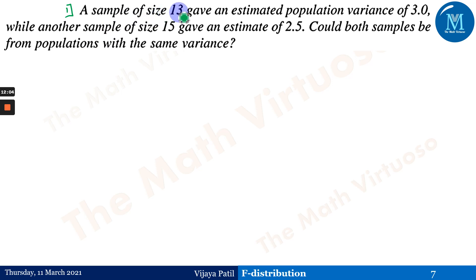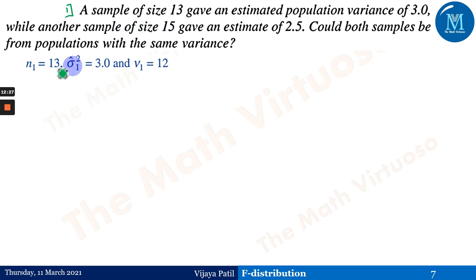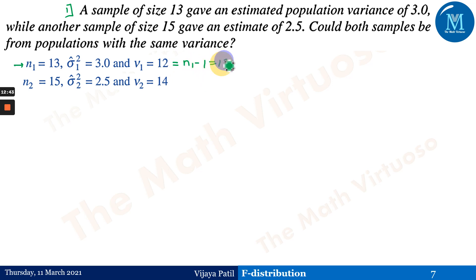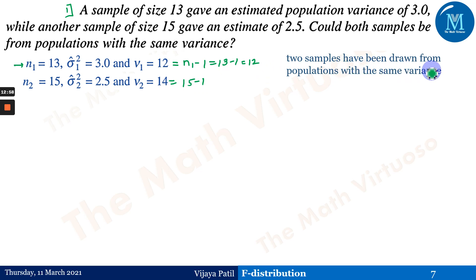Example 1: A sample of size 13 gave an estimated population variance of 3, while another sample of size 15 gave an estimate of 2.5. Could both samples be from a population with the same variance? We have two samples: n₁ = 13, μ̂₁² = 3, ν₁ = n₁ − 1 = 12; and n₂ = 15, μ̂₂² = 2.5, ν₂ = n₂ − 1 = 14.